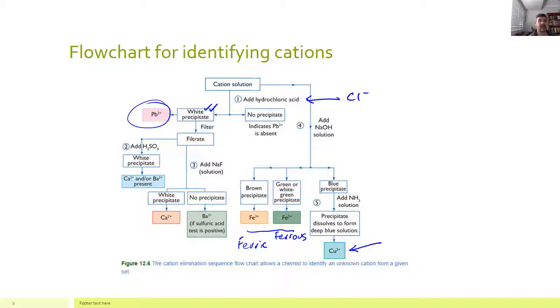That leaves us a choice of calcium, barium, the two forms of iron and copper. Now, from here, we can identify a few different types of things going on.